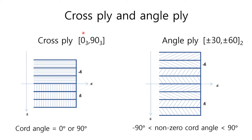Cross ply means its chord angle is 0 or 90 degrees. So all the plies in the left picture are cross plies: 3 zeros and 3 nineties. This is the short expression for this laminate structure: triple zero and triple nineties. Angle ply means its chord angle is a non-zero value, larger than minus 90 degrees and less than plus 90 degrees. So all the plies in the right picture are angle plies. This is the short expression for this laminate structure — it means double plus minus 30 degrees and plus minus 60 degrees.